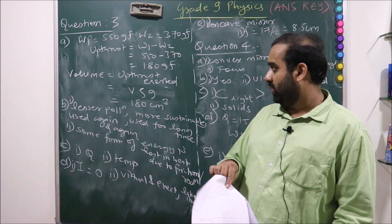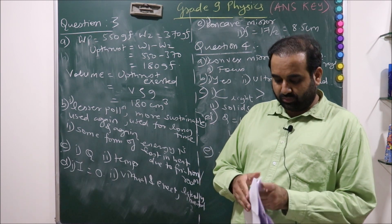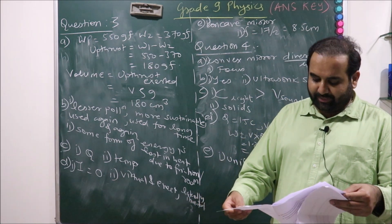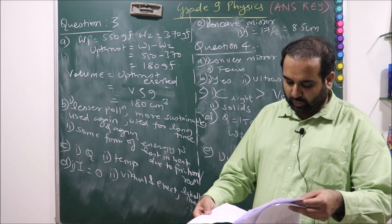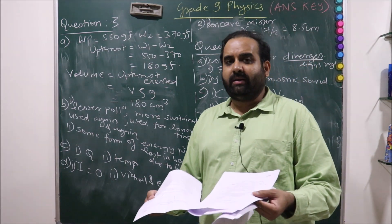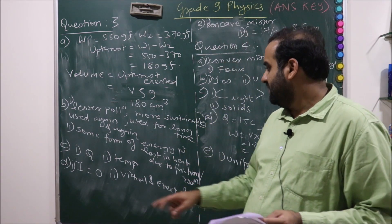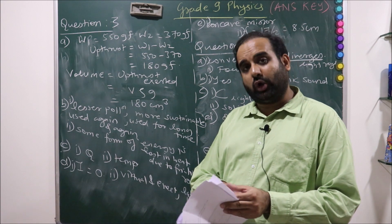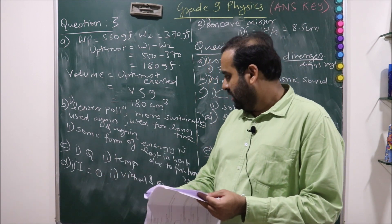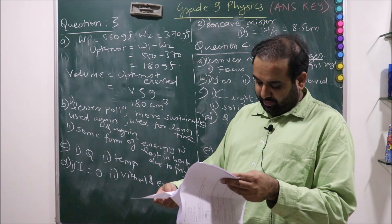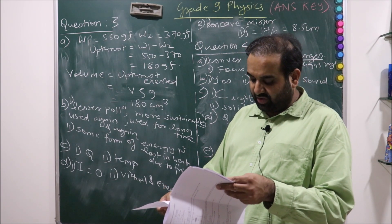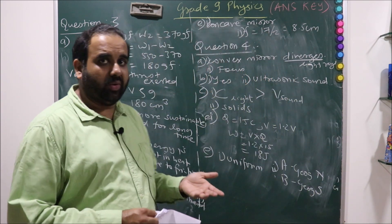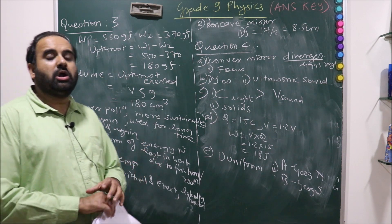When two bodies P and Q are kept in contact, it is found that the heat gets transferred from Q to P. Very simple: when the transfer of heat takes place between bodies which are at unequal temperature. It is going from Q to P, so which of the two is hotter? Definitely Q will be the hotter one. Which physical quantity determines the direction of transfer of heat? It is the temperature. Because of the temperature, we will understand which particular body is at a higher temperature and which one is at a lower temperature.